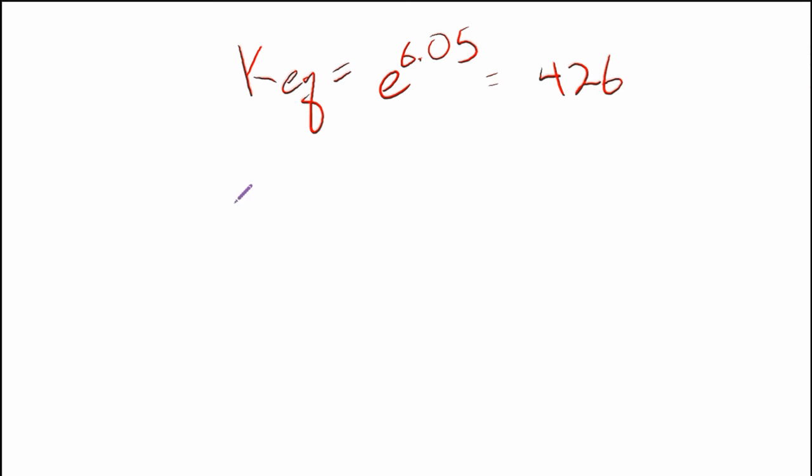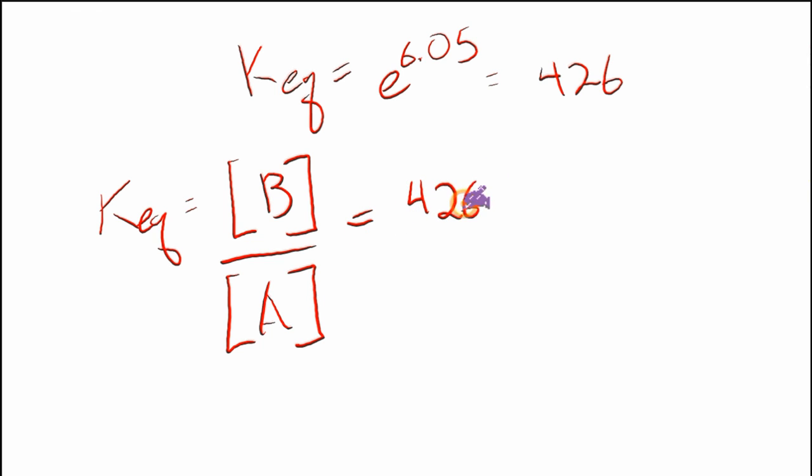There's the answer to the equation. But what does that mean? Let's look at this. Here, Keq is equal to the concentration of the product over the reactant. So what that means is 426 over 1. We had a lot of product form.